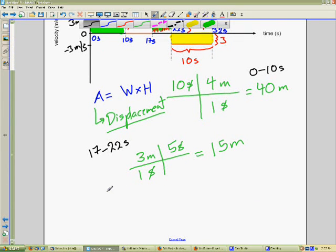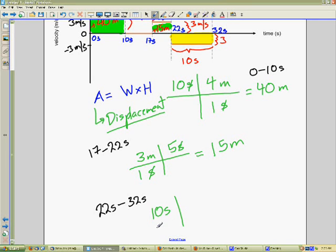So, from 22 seconds to 32 seconds, I'm going to do my calculation. I have a 10 second width multiplied by a velocity of 3 meters per second. Now, wait. Remember, I had that negative. I'm going to stick the negative right in there. So that equals 10 multiplied by negative 3 is negative 30 divided by 1 is still negative 30. The seconds cancel out. I'm left with negative 30 meters. So this part has a displacement of negative 30 meters.